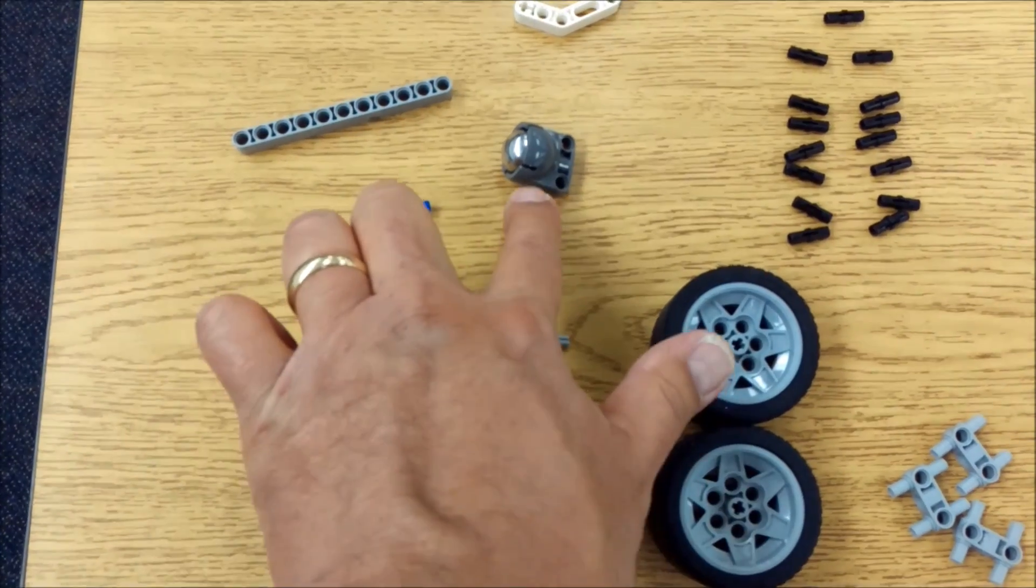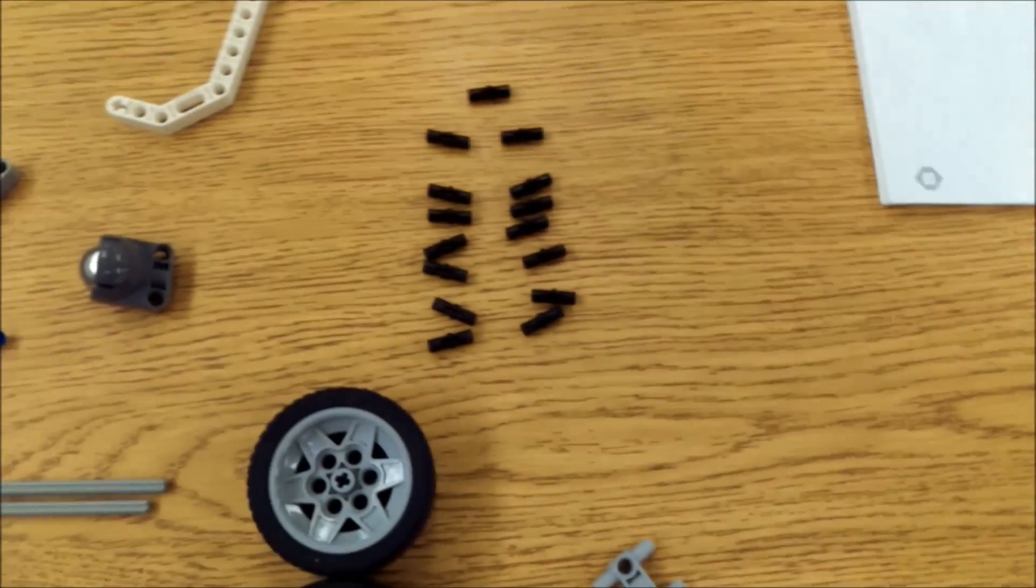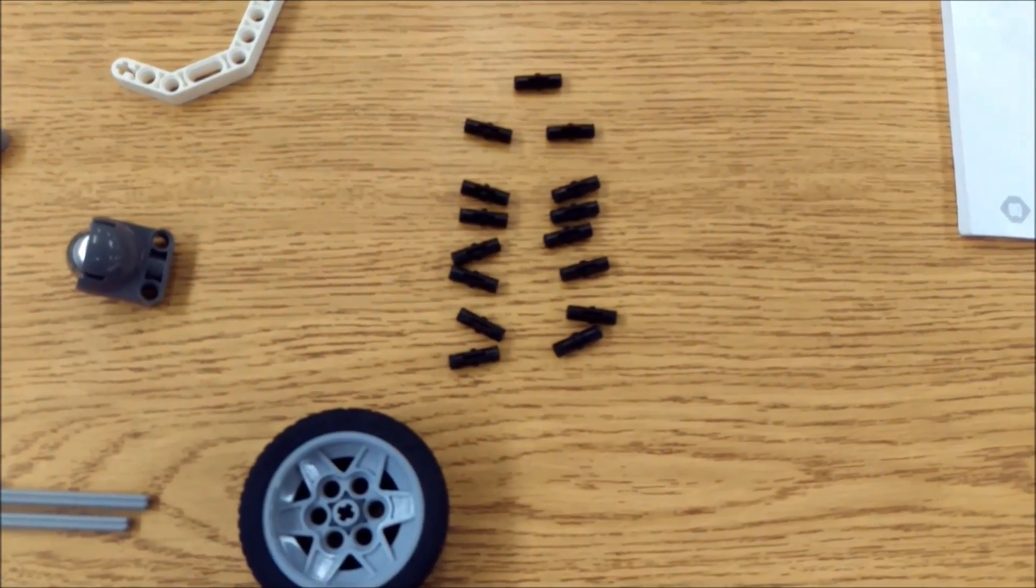Blue piece here, your ball and caster. This is actually an 11 hole beam. Okay, 11 hole beam. And I have 15 black connectors.